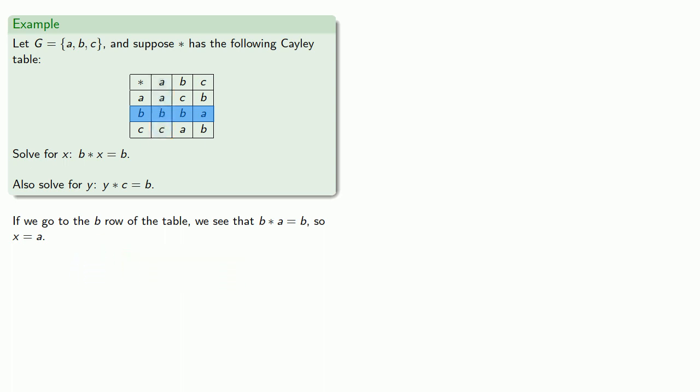But wait, there's more. We also see that B star B is equal to B. And so X could also be equal to B.